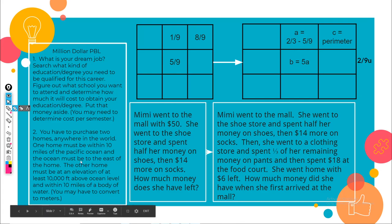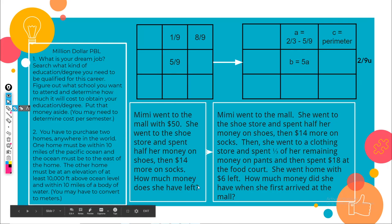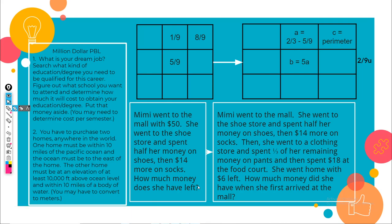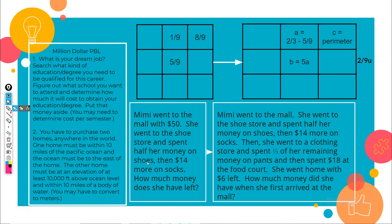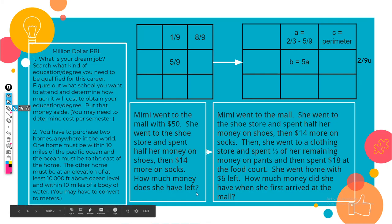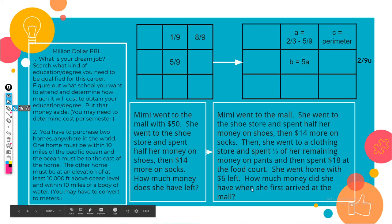Take a look at this word problem. It's a realistic situation — let's see how we can make it more complex. It says: Mimi went to the mall with $50, went to the shoe store and spent half her money on shoes — that's $25 — then $14 more on socks, leaving her with $11. The question is how much money does she have left? It's really straightforward and simple. But look at how we can make it more complex.